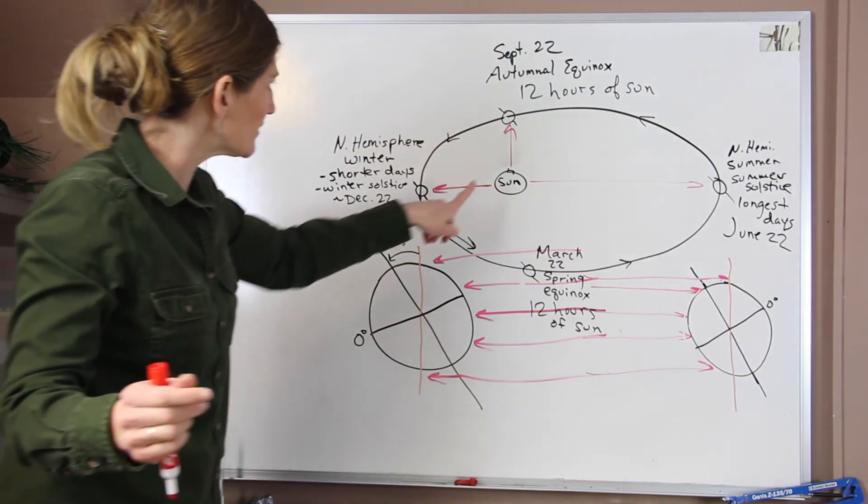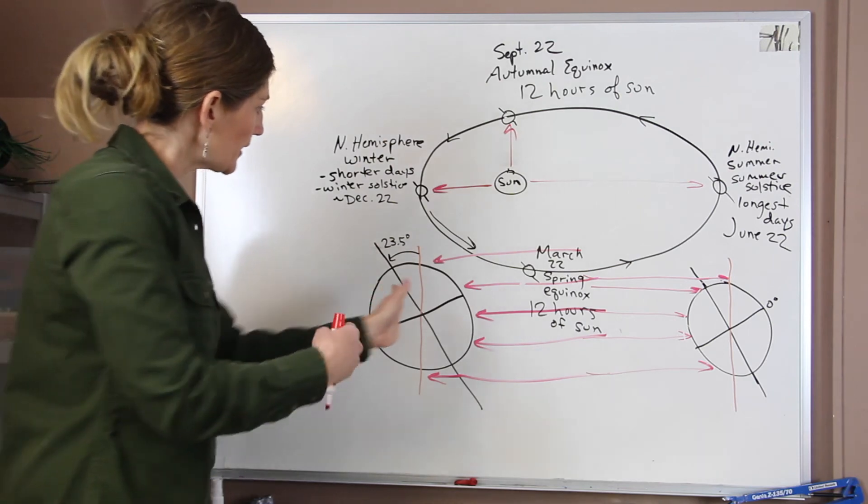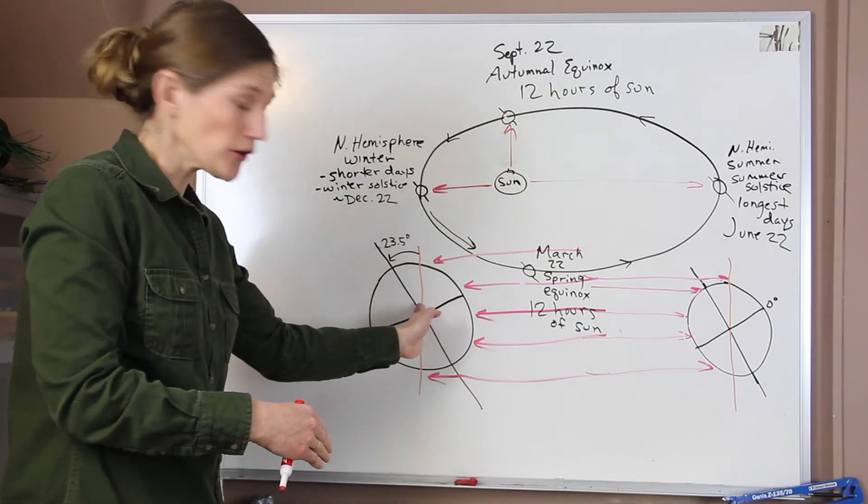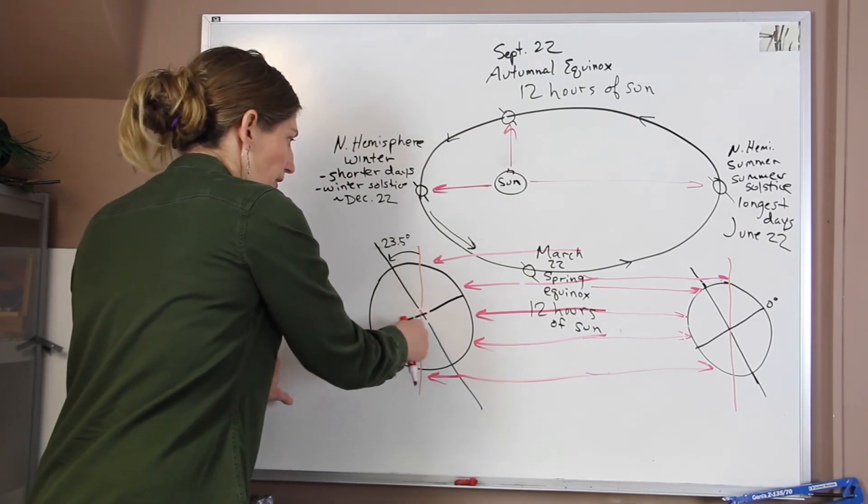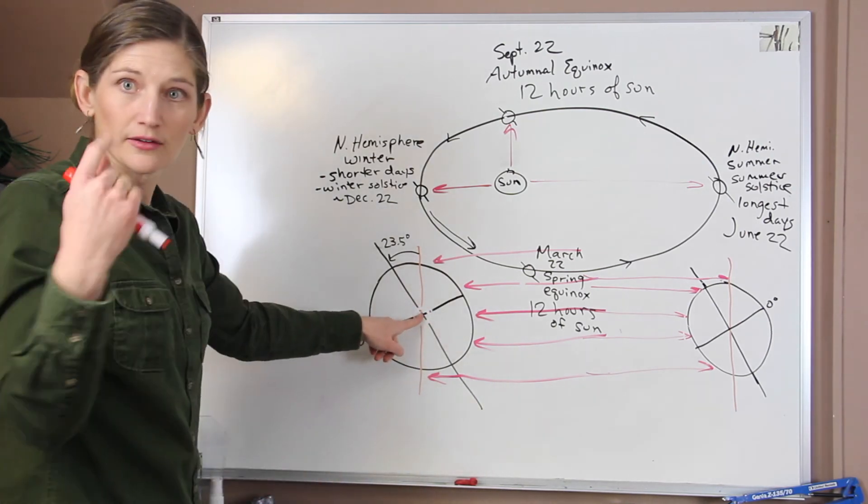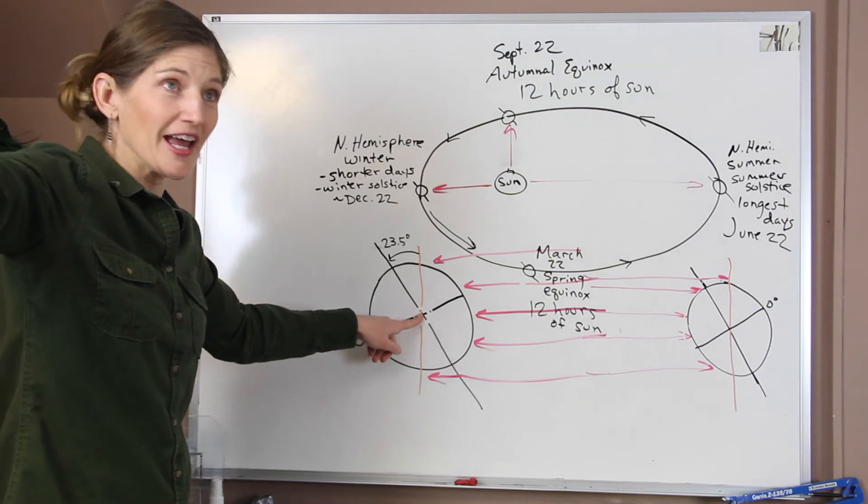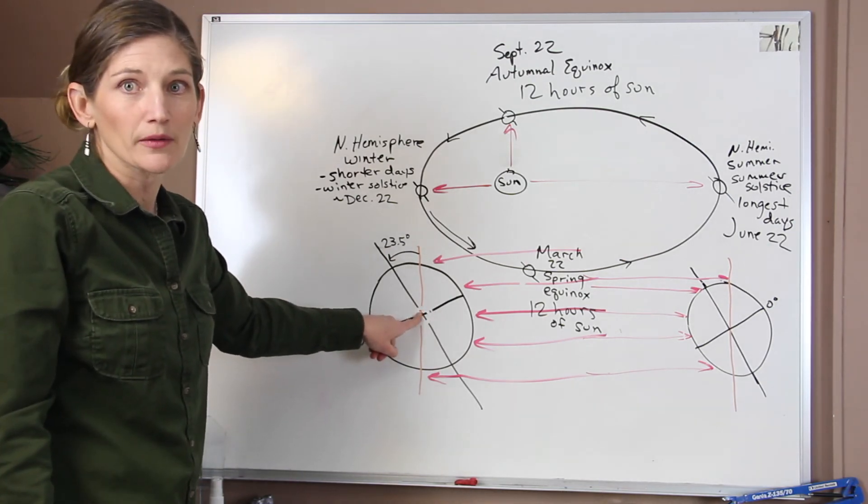So now we have to imagine that the sun would be shining directly on our earth. And as it does that, it's going in towards the board. The overhead sunlight, overhead, where the sun is overhead at noon, is right at the equator. Okay.